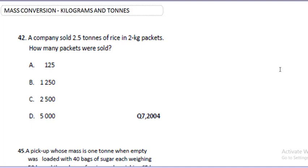Okay, so this question says a company sold 2.5 tons of rice in 2 kg packets. How many packets were sold? Now I want you to understand that this is a conversion question. We're talking about kilograms and tonnes, and we want to understand how to convert it and get the answers right.